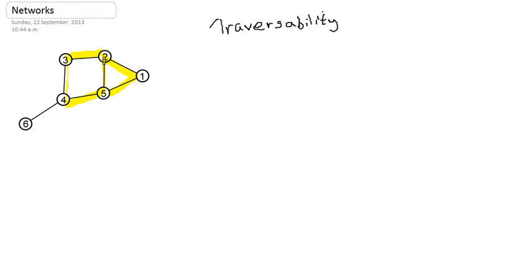Okay, so the identification of can you make a route around the network without retracing an arc, that is traversability.